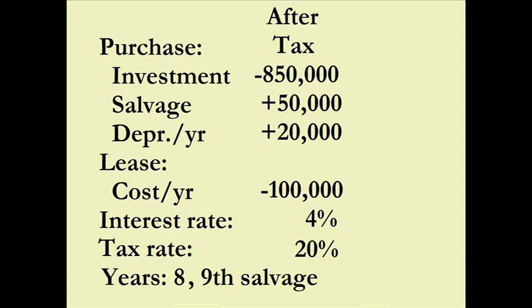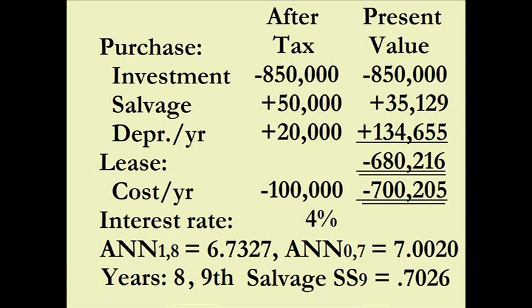Now let's do the present values. The initial investment at time zero has no tax consequences — unchanged at minus $850,000. Salvage value in year nine: that $50,000 now has a present value of $35,129, using a factor of 0.7026. For the depreciation — end-of-period — for the $20,000 savings, the eight-year present value factor is 6.7327.